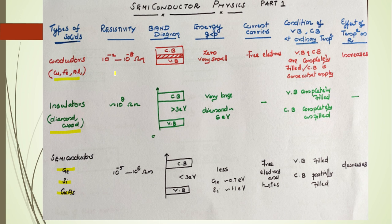We have to look at the resistivity range for each type. For conductors, the resistivity range is from 10⁻⁸ to 10⁻² ohm-meter. Insulators have resistivity of the order of 10⁸ to 10¹¹ ohm-meter. For semiconductors, it ranges from 10⁻⁵ to 10⁶ ohm-meter.